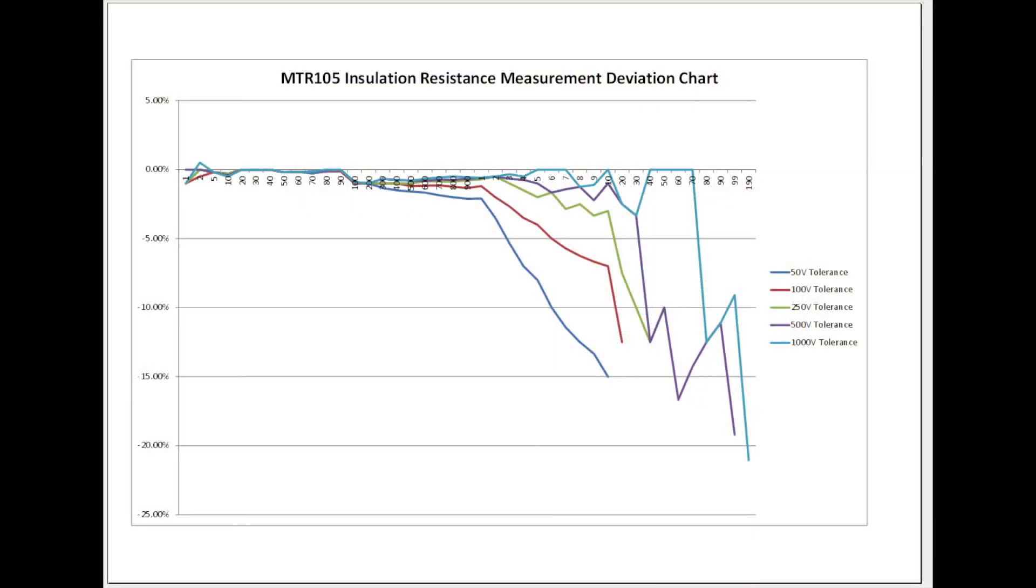Moving on to the plot, the plot tells the picture really. After one gig ohm on a 50 volt test you can see the tolerance starts to drop away and at 70 gig ohms for a 1000 volt test you again see the tolerance start to drift away from the nominal values.